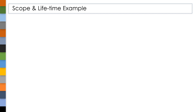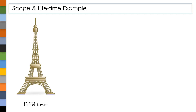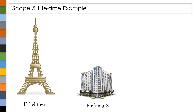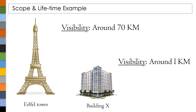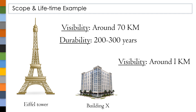Let me show an example. Here we have two things: one is an Eiffel Tower and the other is a small building. When we speak about scope, i.e., visibility, the visibility range of the Eiffel Tower is around 70 km, whereas the visibility range of building X is around 1 km. So the scope of the Eiffel Tower is 70 km and the scope of the small building is around 1 km — meaning if you go out of that scope, these things are not visible to you. Coming to lifetime, the durability of the Eiffel Tower is around 200 to 300 years, whereas this building X is around 70 to 100 years. Beyond this lifetime, these buildings may not be present. Remember: scope tells about visibility, whereas lifetime tells about durability.